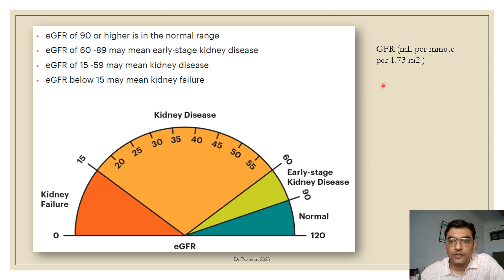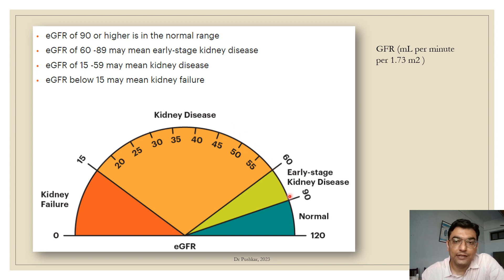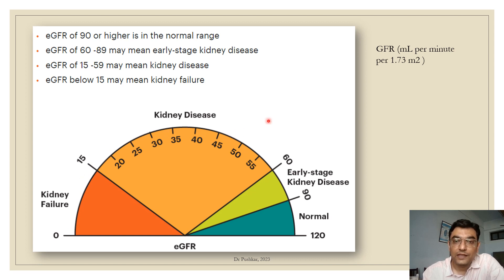GFR is calculated in mL per minute per 1.73 m², where 1.73 m² represents the body surface area. A GFR of 0–15 mL/min indicates kidney failure or renal failure, requiring dialysis. GFR of 15–59 indicates kidney disease, 60–89 indicates early stage kidney disease, and above 90 is normal. We use these GFR values to stage CKD.